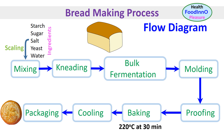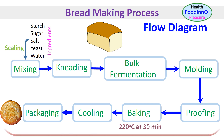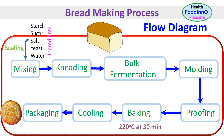Going back to the definitions: the process is the sequence of steps — as we identified seven steps. The unit process includes the analysis of all steps, from scaling of ingredients to the final bread product. Unit operation considers the analysis of each individual step in the unit process, for example, kneading.